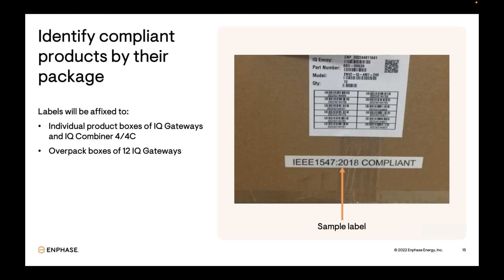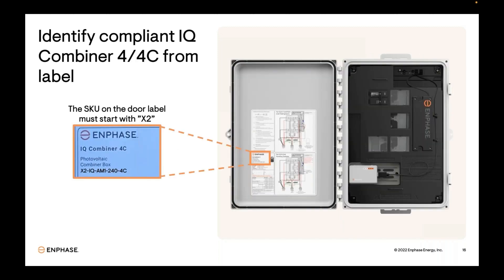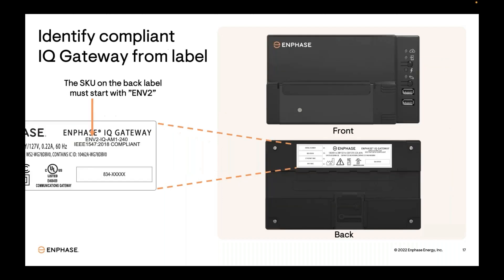To easily identify new compliant products, there will be labels on the cardboard boxes of IQ Combiner 4s and IQ Gateways saying IEEE compliant. There will also be a label on the outside of bulk boxes of 12 IQ gateways. If you don't have the original packaging, you can check the SKU number on the inside of the combiner box door — it's on the left-hand side underneath where it says Enphase. For the IQ Gateway, flip it over; the back label shows the SKU and will say IEEE 1547-2018 compliant.